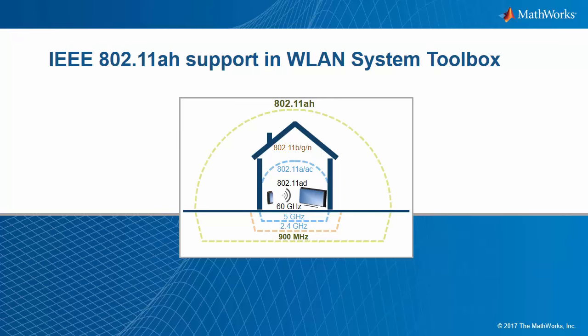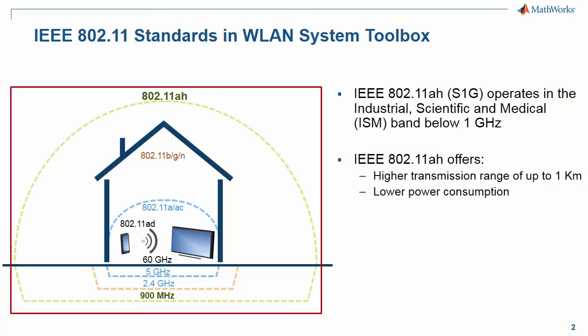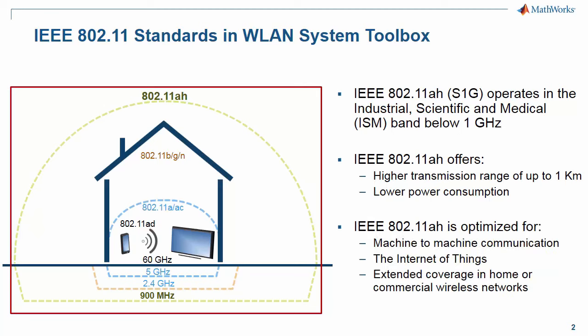This video introduces the use of WLAN System Toolbox to generate IEEE 802.11AH waveforms. 802.11AH, also known as S1G, operates in the industrial scientific and medical band below 1 GHz. This band has better propagation characteristics than the 2.4 or 5 GHz bands, allowing for links up to 1 km and penetration through walls and floors. 802.11AH is optimized for low power, long range and low data rate applications such as machine-to-machine communication, wireless sensor networks for the internet of things, or extended coverage in home or commercial wireless networks.